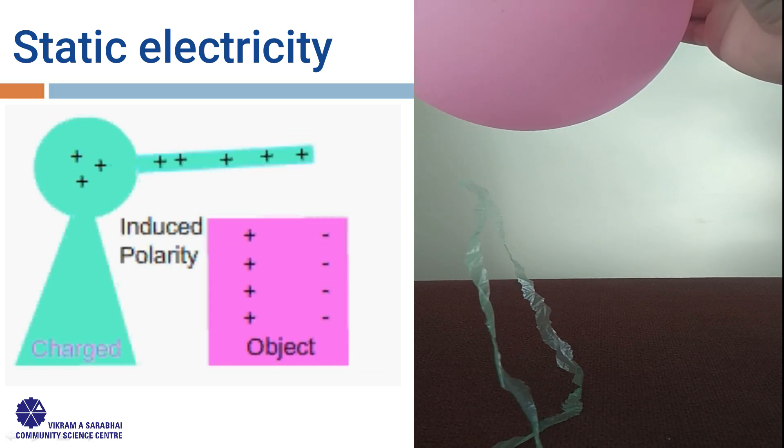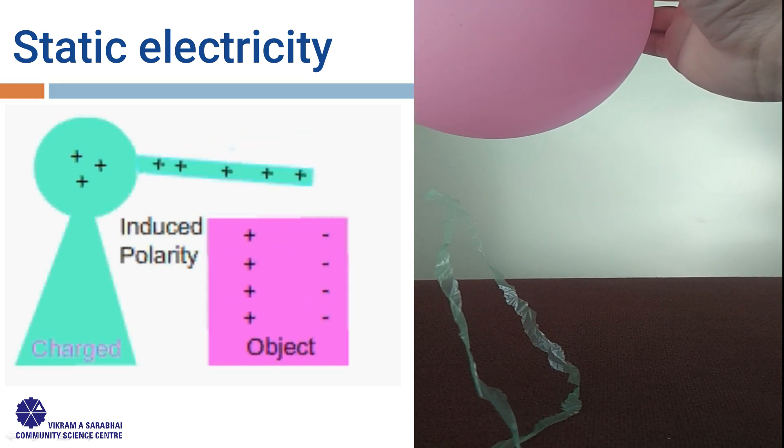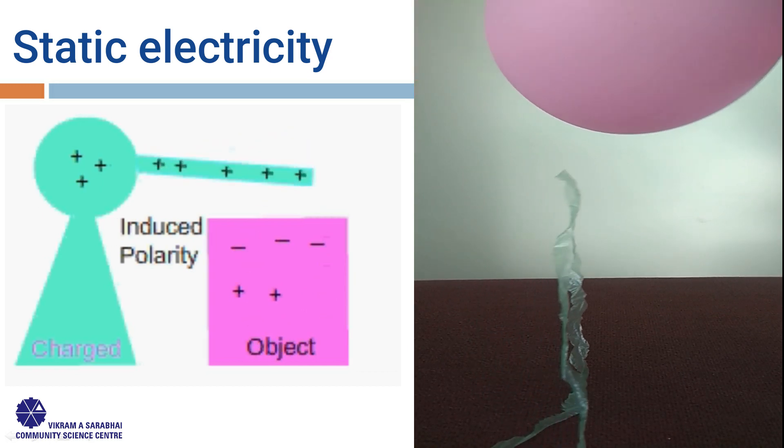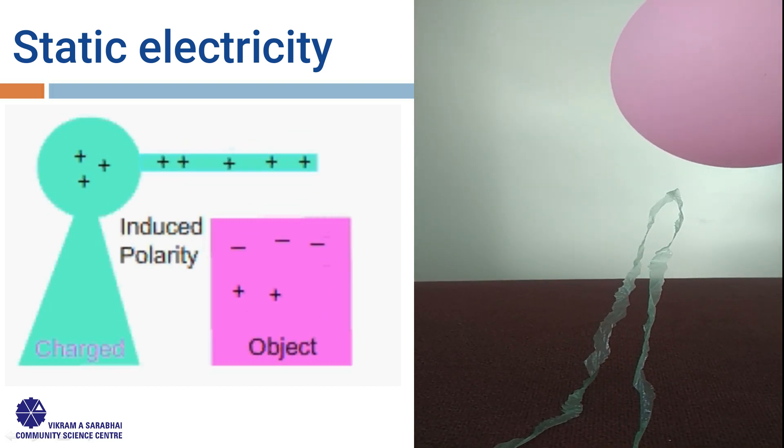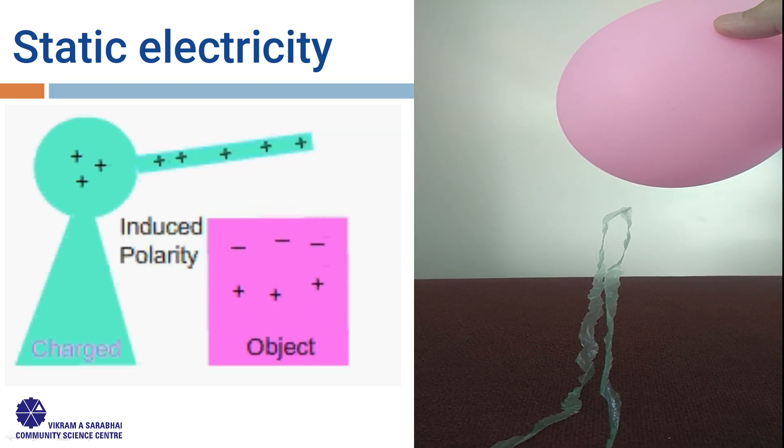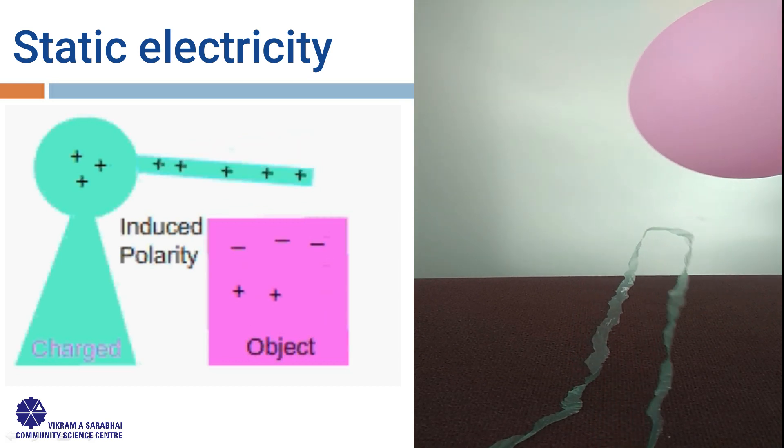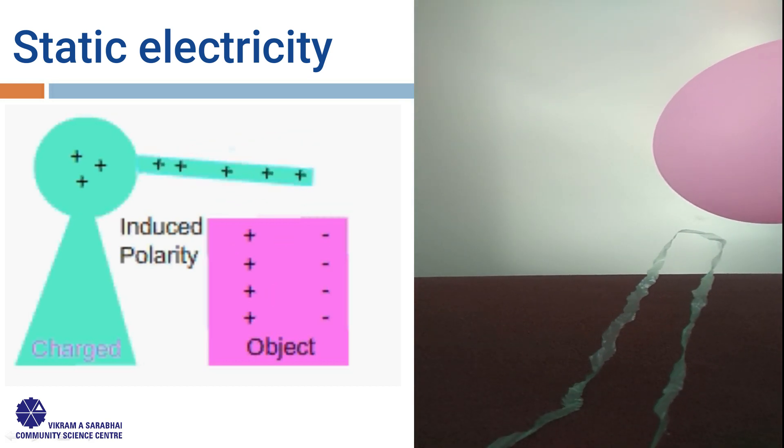Hence, it is the result of an imbalance between negative and positive charges in an object. These charges can build up on the surface of an object until they find a way to be released or discharged.